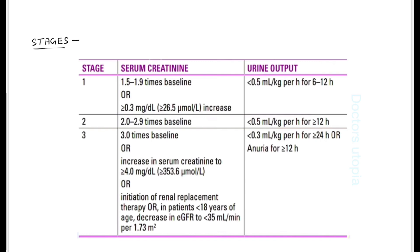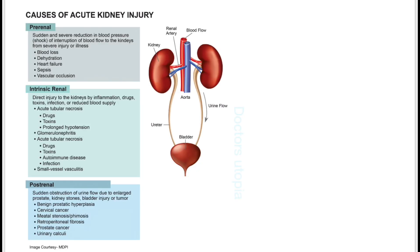Stage 3 is three times baseline creatinine and urine output less than 0.3 ml per kg per hour for more than 24 hours. There are three main types of causes of acute kidney injury: pre-renal, intrinsic renal, and post-renal.